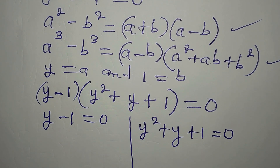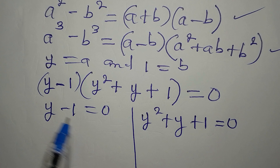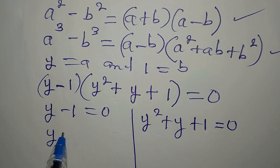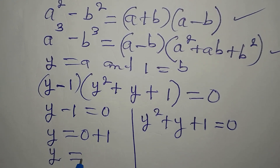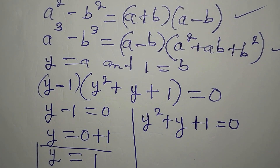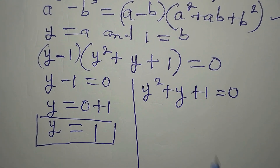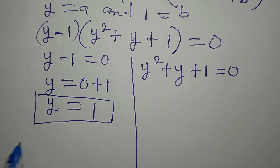The first factor is linear, giving us y - 1 = 0, so y = 1. This is a real solution to the equation. From the quadratic equation y² + y + 1 = 0 we expect to get two additional solutions.